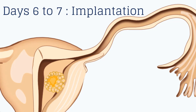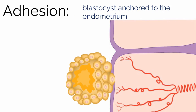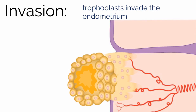At time of implantation, three processes occur. The first is apposition, in which there is a loose connection between the trophoblast cells of the blastocyst to the endometrium. Second is adhesion, in which the blastocyst is anchored to the endometrium. Third is invasion, in which the trophoblasts invade maternal capillaries and vessels in the endometrium, providing nutrients essential for continued growth.